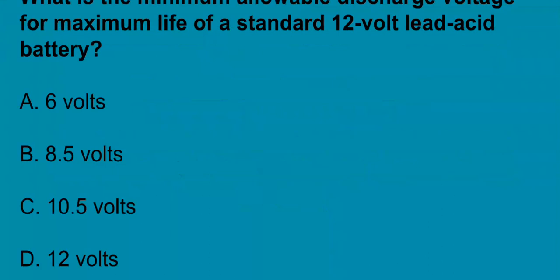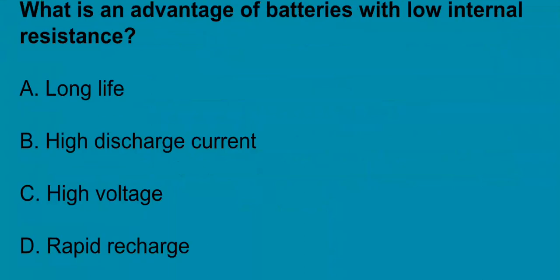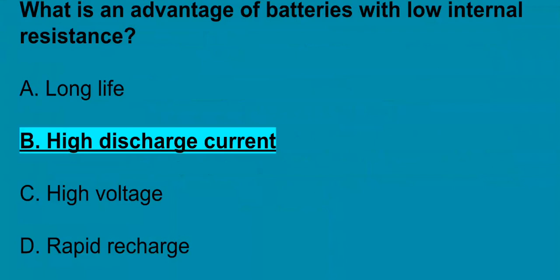G6A01, what is the maximum allowable discharge voltage for maximum life of a standard 12 volt lead acid battery? Correct answer is 10.5 volts. G6A02, what is an advantage of batteries with low internal resistance? It's going to be high discharge current.